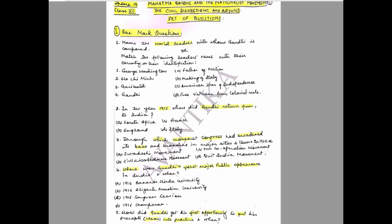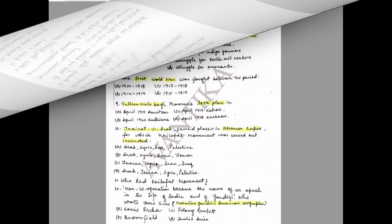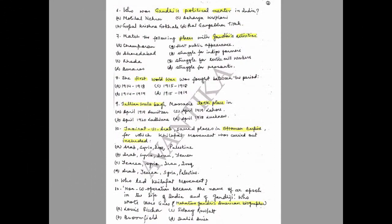Question 5: How did Gandhi get his first opportunity to put his ideas into practice, and when? Question 6: Who was Gandhi's political mentor in India? Options: A) Motilal Nehru, B) Gopal Krishna Gokhale, C) Acharya Kripalani, D) Bal Gangadhar Tilak. Choose the correct option.